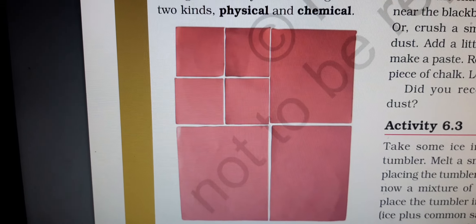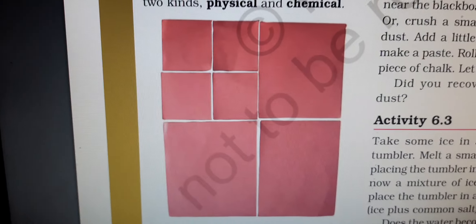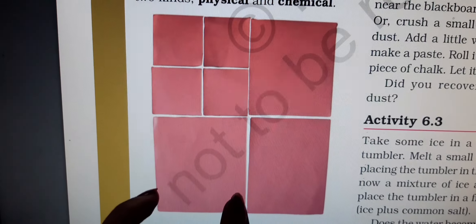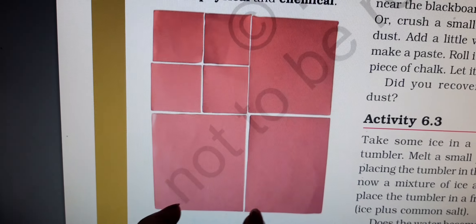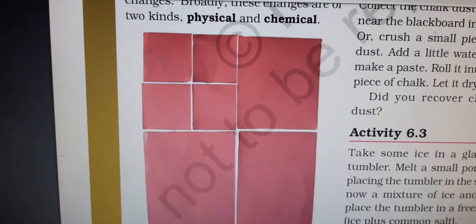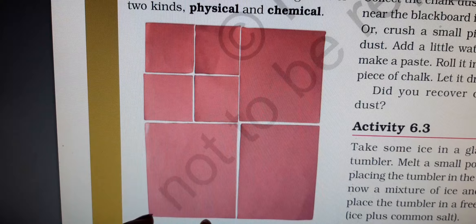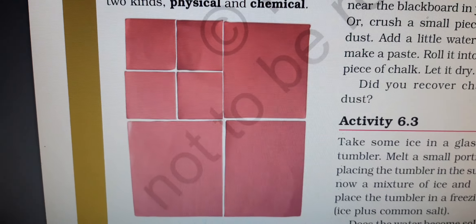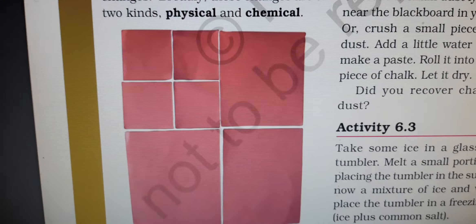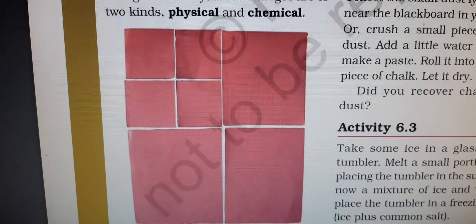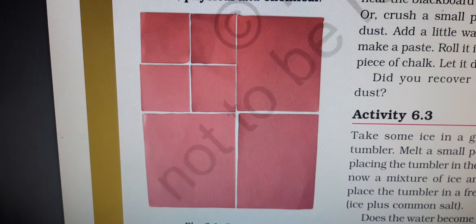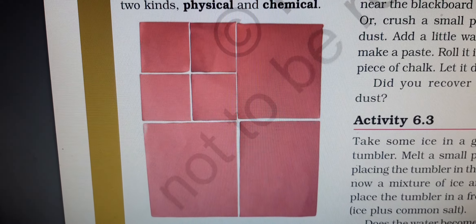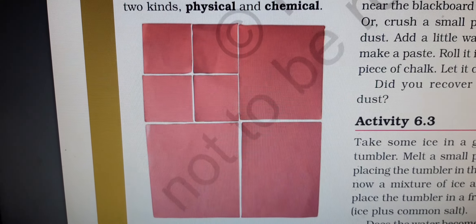Though you cannot join back the paper, the piece of paper which you have cut is still paper only — it has not changed into something else. No new substance is formed here; it is paper itself. Similarly, when you break a chalk into pieces, the small pieces of chalk formed are chalk itself — the size of the chalk has changed, but the characteristics of the chalk have not changed.